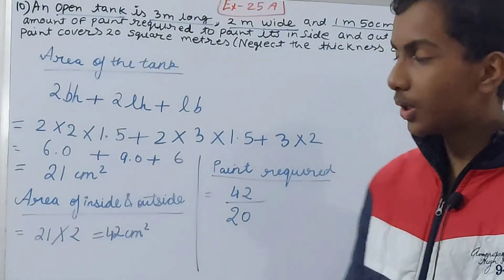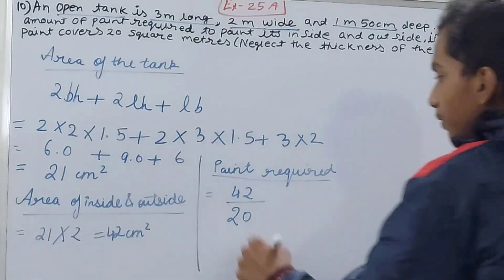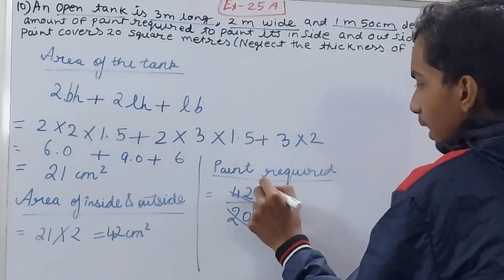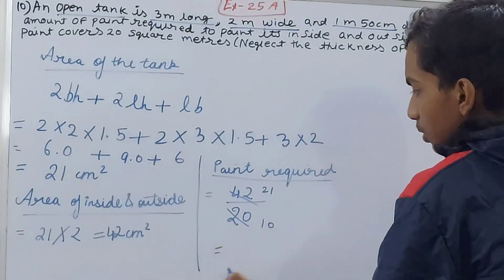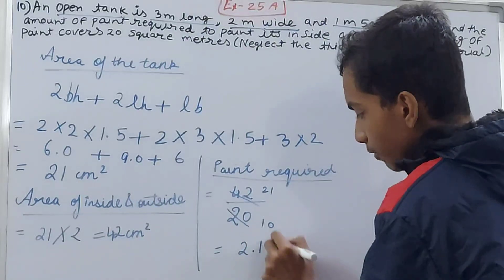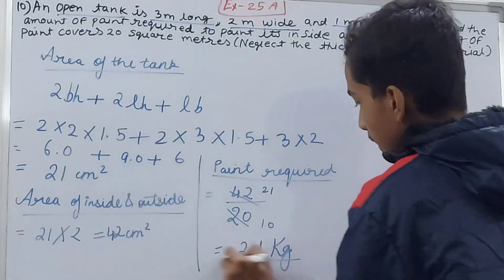Solve this, right? So what you will have: here 10, here you will have 21. So this is 2.1 - decimal point moves to one place - 2.1, and put the unit: kilograms. This much paint is required to paint the tank from inside and the outside.